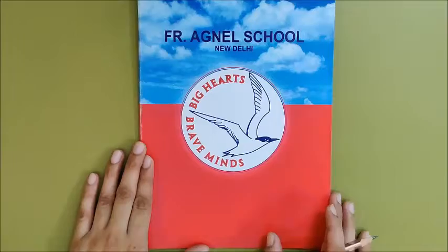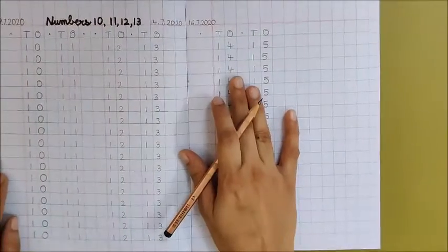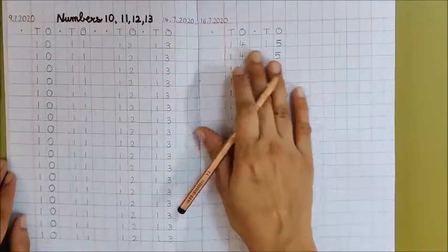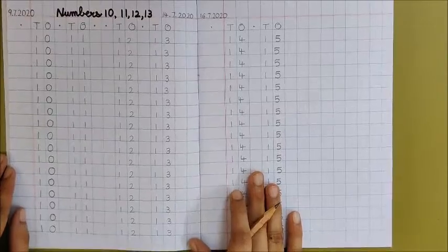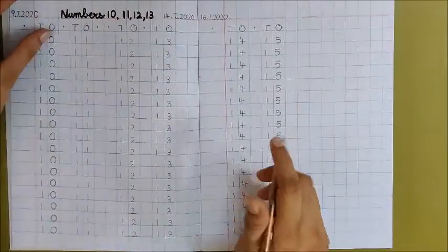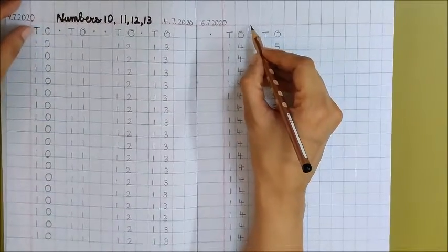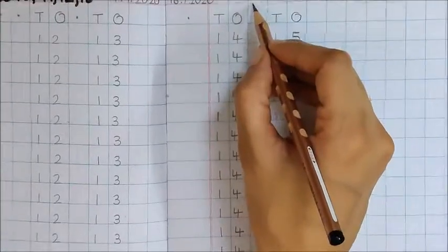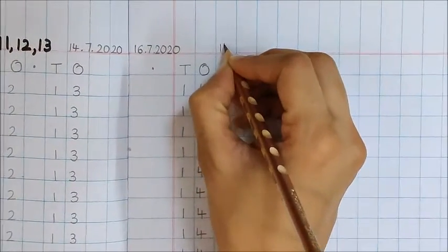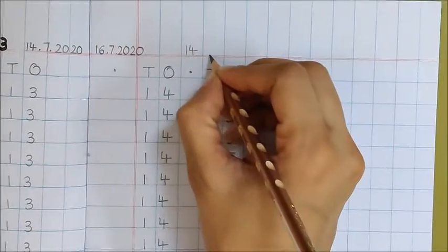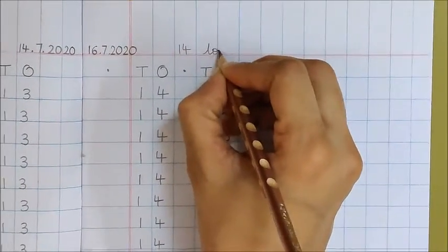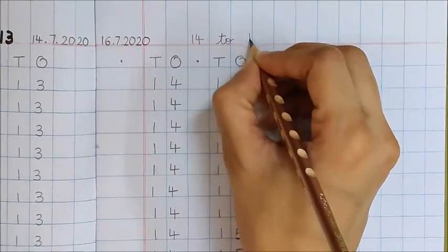So I'll show you the setting. You remember we had done writing of numbers 14 and 15 on this page. Now, ask your mama or papa to write this for you on the red line: 14 to 17.